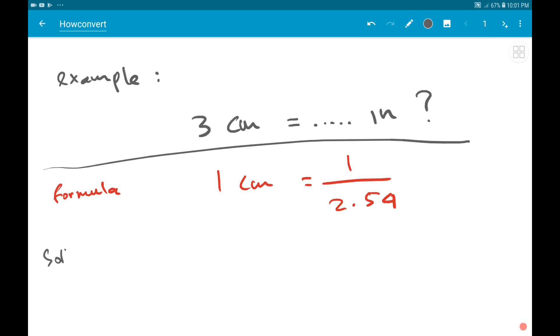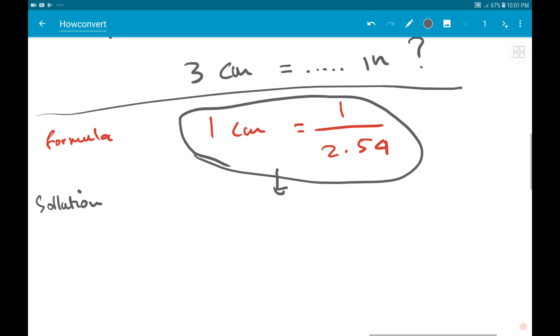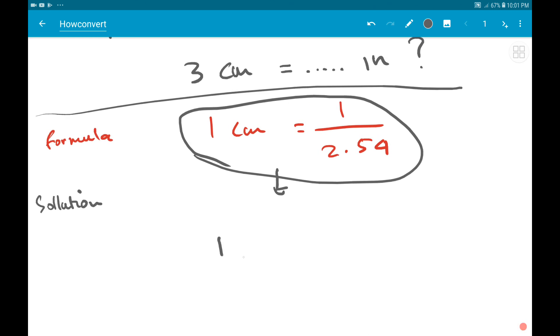This is the solution. Okay, first write the whole formula again: 1 cm = 1/2.54 inches. Now we need to multiply both sides.